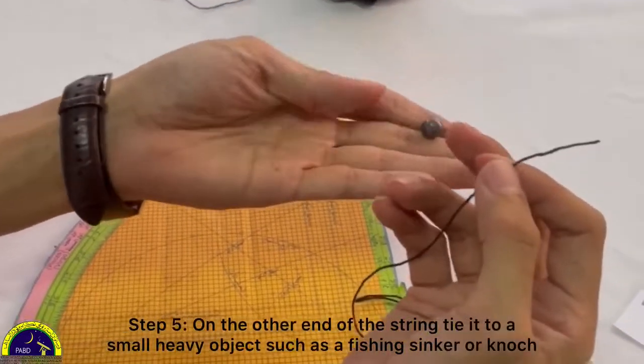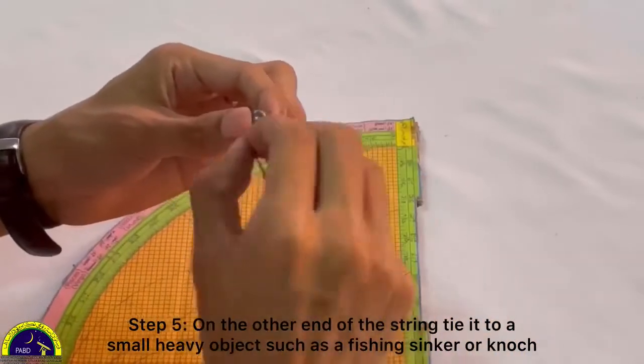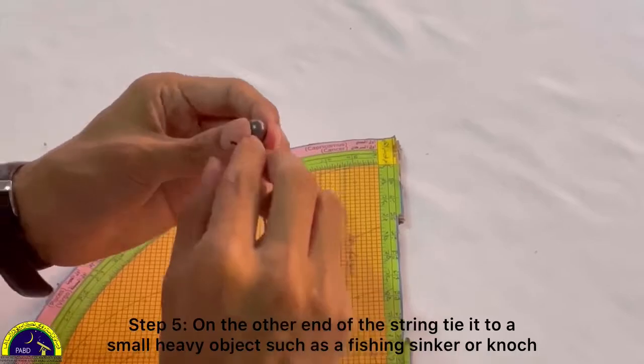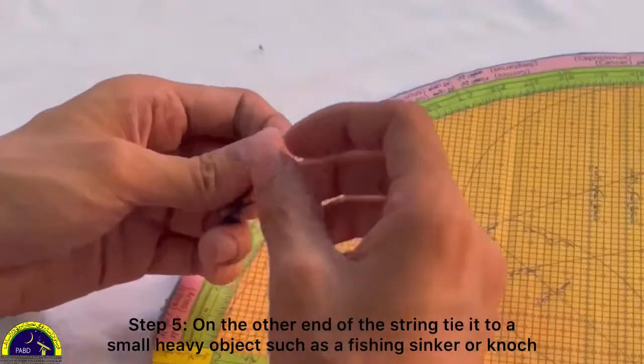Step 5: On the other end of the string, tie it to a small heavy object such as a fishing sinker or nut.